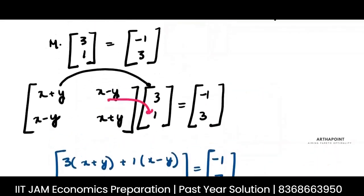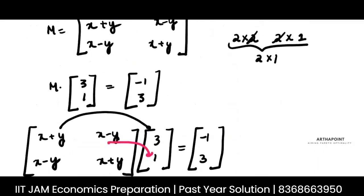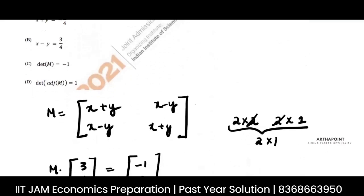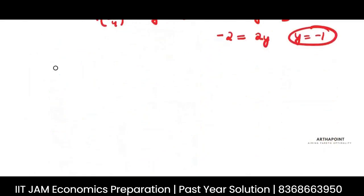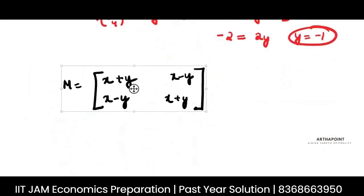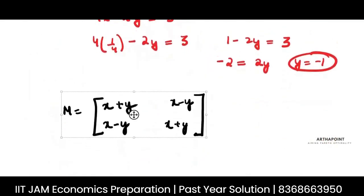So the matrix is this, right? It is this. So let's write down the matrix now. So this was my matrix. Because we now know the values of X and Y, we will just plug in those values. So I will get the answer as